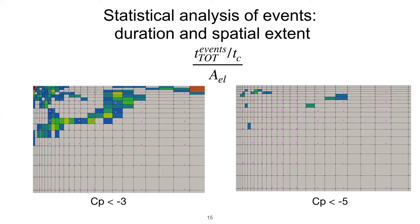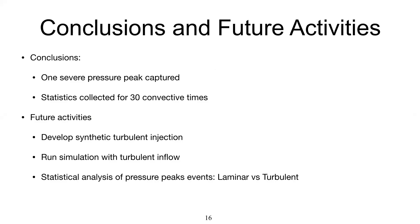We were using this same piece of technology to try to have a statistical analysis of all these low pressure events we're seeing on the building. For instance, we're producing plots where we're looking at our building and checking how much time a particular element in the mesh, a particular region of our building, has seen a CP of minus three on the left or a CP of minus five on the right. It's not so easy to compare experimental and CFD results because we have much different resolution both in time and space. We're trying to work a clever way and fair way to compare the two results. In general, we got one severe pressure peak captured and we were able to compute statistics for 30 convective times. But now we're interested in seeing what happens when we actually have turbulence coming in.